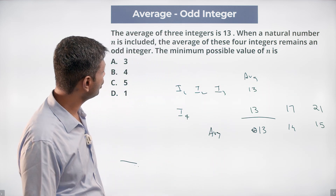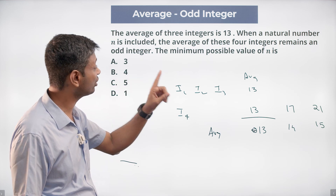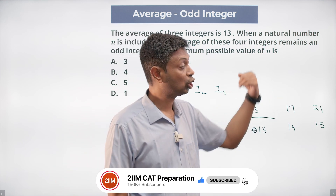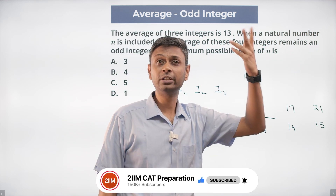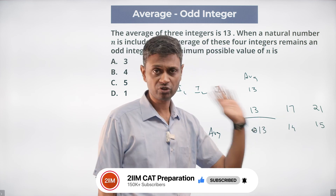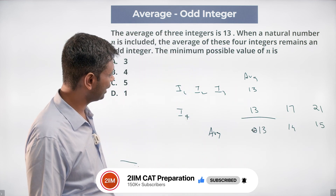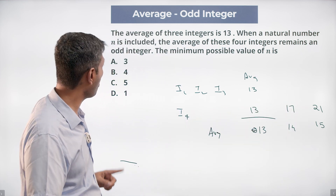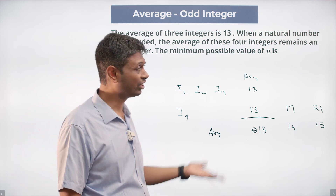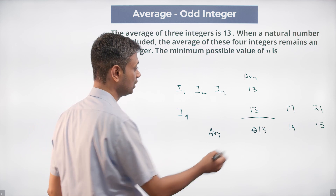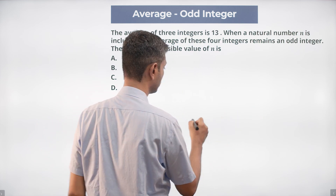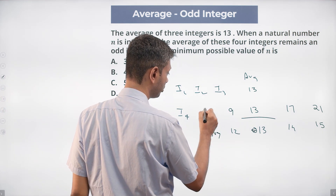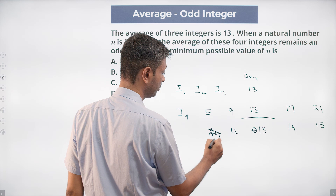The average must remain an odd integer, so bringing 4 more won't work — it needs to bring 8 more. Values 21, 29, 37 bring the average from 13 to 15, 17... The minimum value above 13 is 21, giving average 15. But the average can also decrease — if I4 brings 9, average becomes 12; if I4 brings 5, average becomes 11.